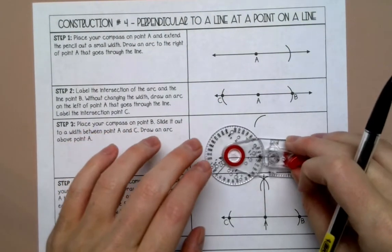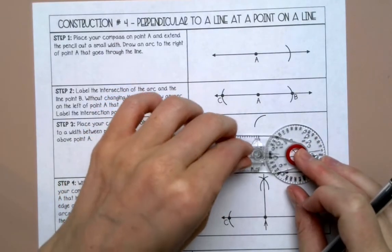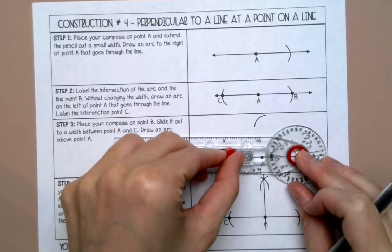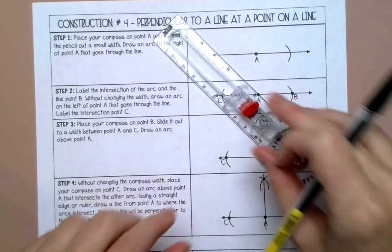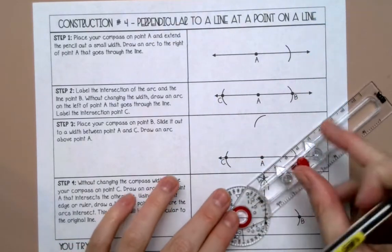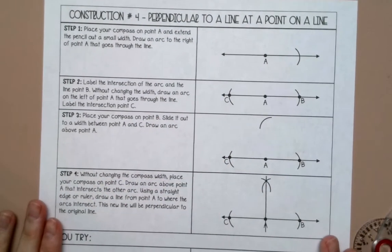Then we're going to slide out our compass to over halfway, so about between A and C, and draw an arc. Then we'll do the same thing from the other side and draw an arc, and then we will connect them.